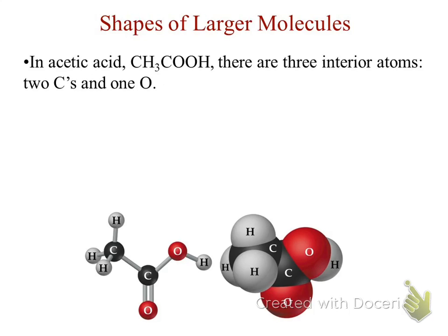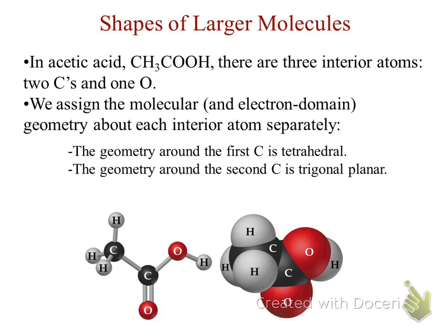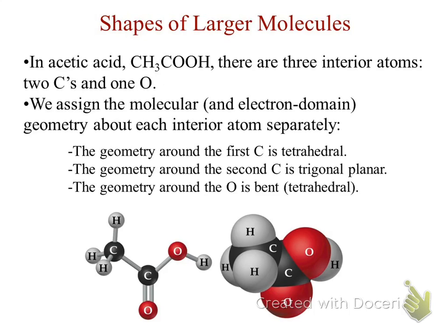Most of what we've talked about has been based on having a single central atom, but there are situations where you don't necessarily have one central atom. In the case of acetic acid, we actually have three interior atoms, and based on each individual atom there will be a different shape. The carbon on the far left has four things connected to it, so its shape is tetrahedral. The second carbon is in one plane with its connections, so it's trigonal planar. And the oxygen, even though it still has tetrahedral electron density, takes on a bent formation.